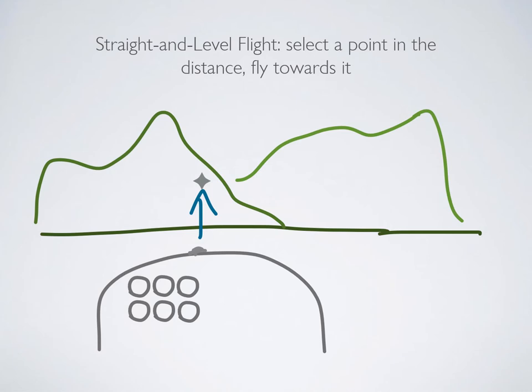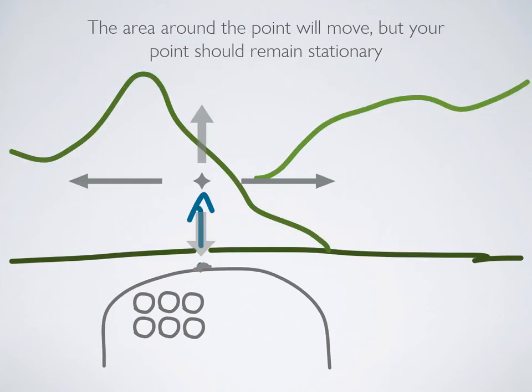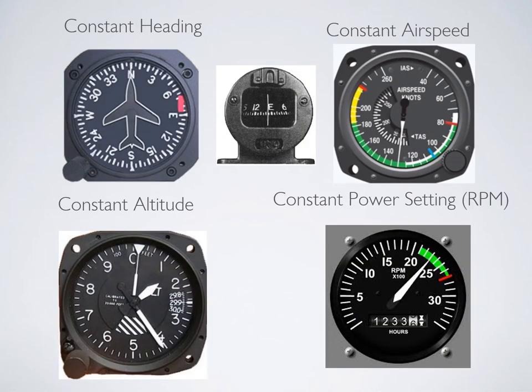To make this easier visually, in the first lesson I'm going to tell you to pick a point way off in the distance - a visual point - and just fly towards it. This is the easiest way to maintain straight and level flight. As you fly towards that point, the space around it will move in relation to it, however the point itself should remain in the same spot in your windscreen. We also call this the point of zero movement, as it appears stationary while other points in space move away from it.